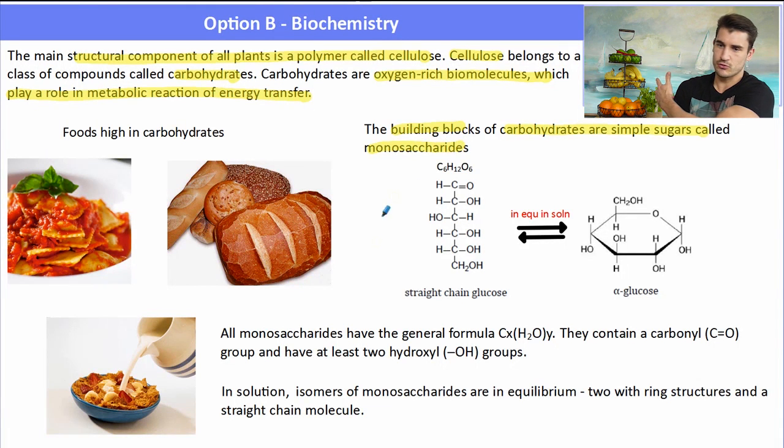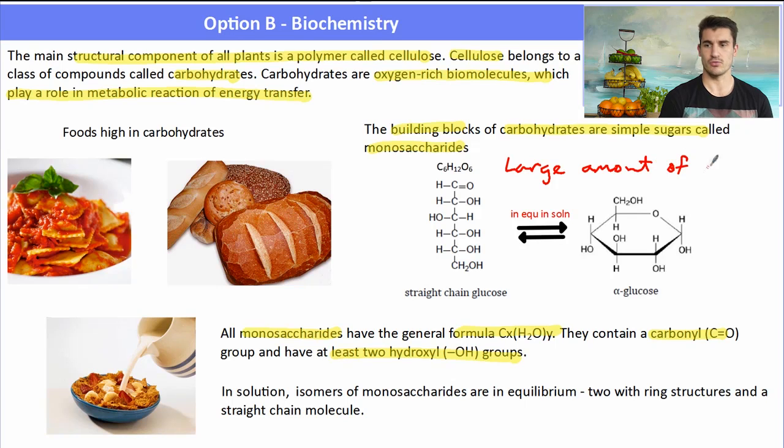And our old mate, the fruit over here, has a lot of simple sugars. So we have a straight chain version of glucose and then we have a cyclic version of glucose. And these are in equilibrium in a solution. Now all monosaccharides have the general formula CXH2O to the Y. And they will contain a carbonyl group and have at least two hydroxyl groups.